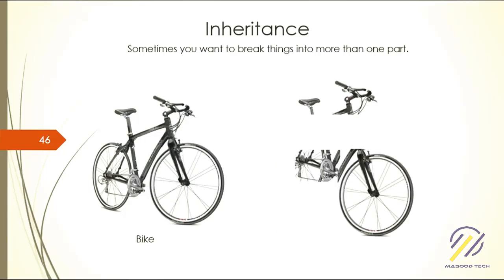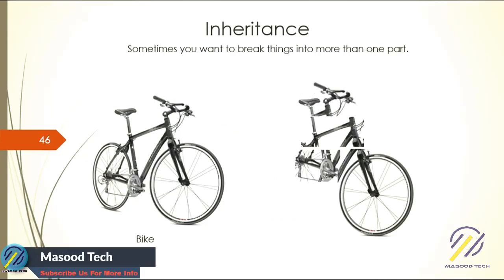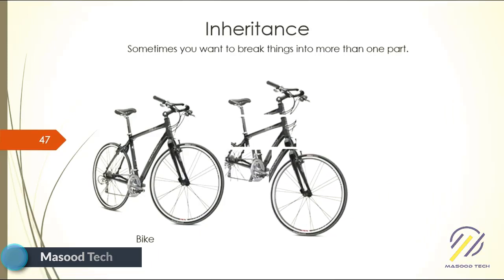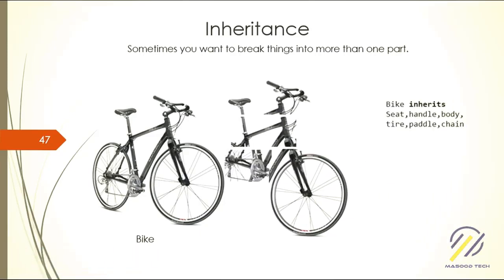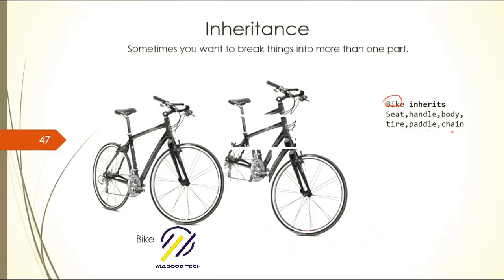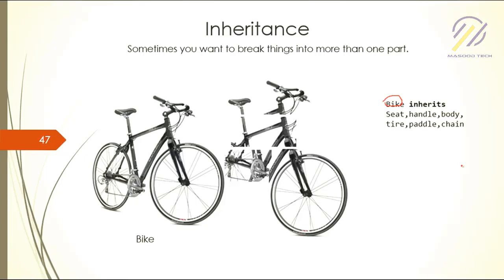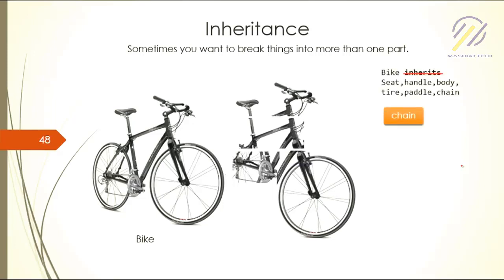We want to inherit the bike from seat, handle, body, tire, panel, chain, etc. But the problem is C# supports only one class at a time for inheritance. You cannot inherit from multiple classes at once. Some languages like C++ do support that, but Java, PHP, and C# do not.